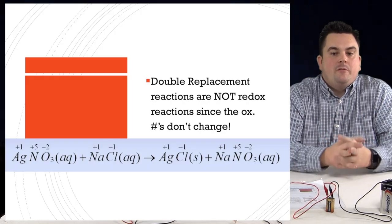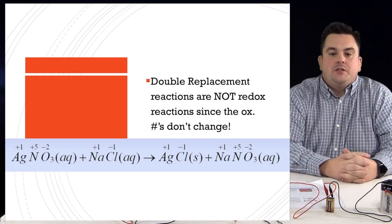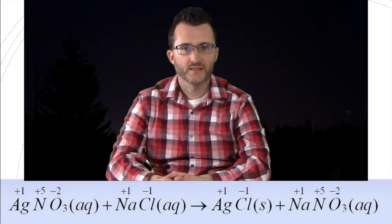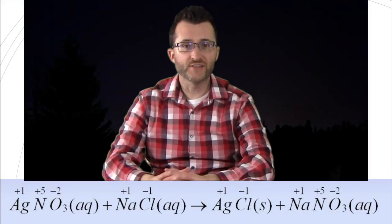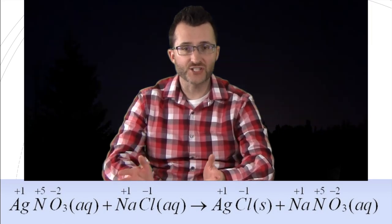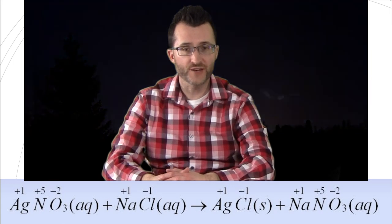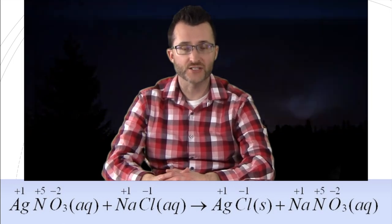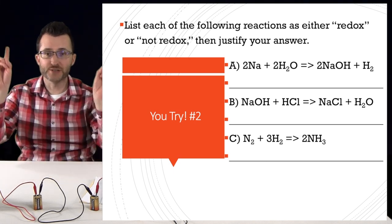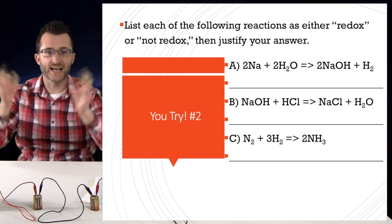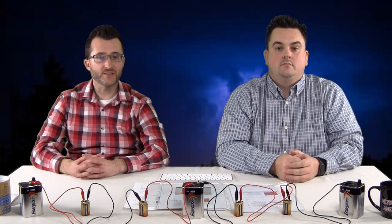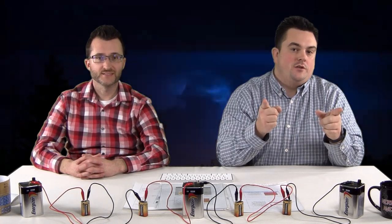Double replacement reactions are not redox reactions since the oxidation numbers don't change. Looking at our example below, in a double replacement reaction the ions are just switching places — so oxidation numbers remain the same. Therefore, double replacement reactions are not redox reactions. That's going to do it for today's episode on oxidation and reduction. Later, nerds.